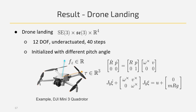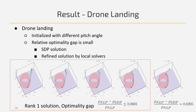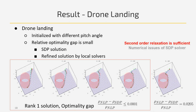We further tested the algorithm on a 12-degrees-of-freedom system actuated by total thrust force and net torque in the body frame. We initialized the drone from tilted poses with different pitch angles and planned paths to the origin while avoiding obstacles. We find that for easier cases the rank-one optimality condition is satisfied, while for harder cases the relative optimality gap is still small. Second-order relaxation is again sufficient, though numerical issues remain a challenge.